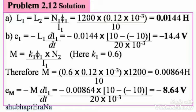The mutually induced EMF, Eₘ = −M × dI₁/dt = −0.00864 × (10 − (−10)) / (20×10⁻³) = −8.64 Volts. This completes the answer, since the flux is linking from one coil to another and we have calculated the mutually induced EMF for the second coil.